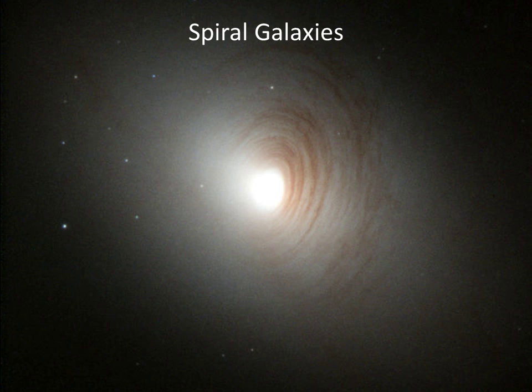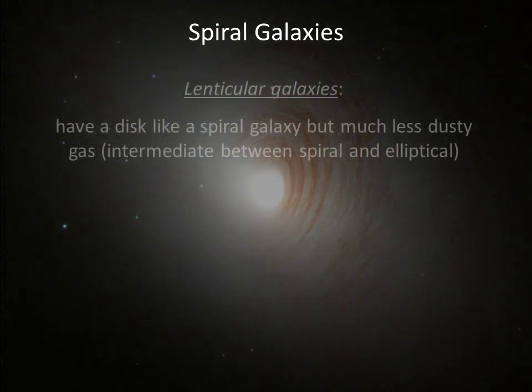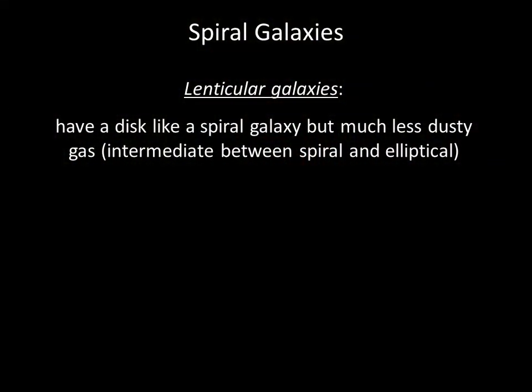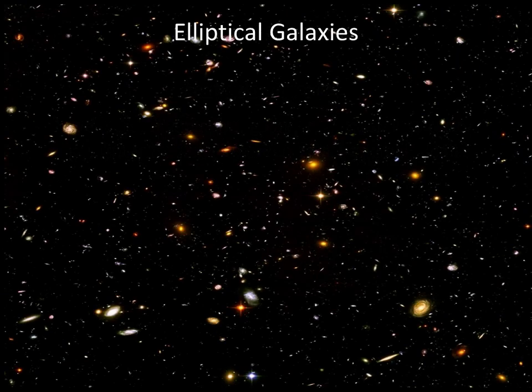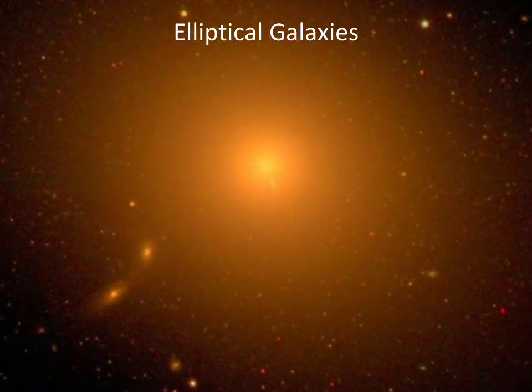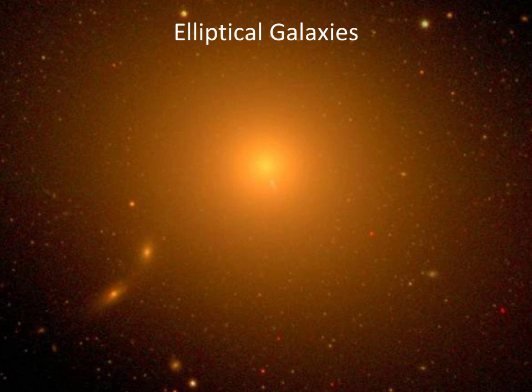Lenticular galaxies have a disk like a spiral galaxy, but have much less dusty gas. They are intermediate between spiral and elliptical galaxy types. Elliptical galaxies differ from spiral galaxies primarily in that they have only a spheroidal component and lack a significant disk component.